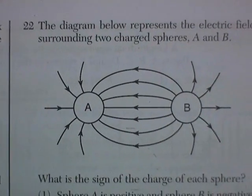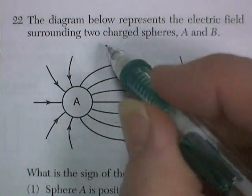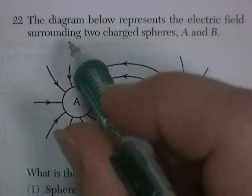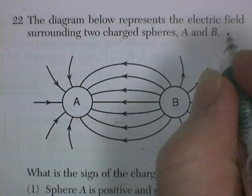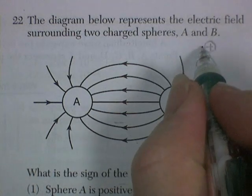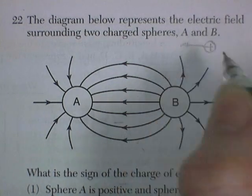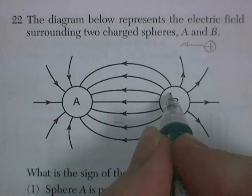Okay, let's go to 22. The diagram below represents an electric field surrounding two charged spheres. Now, electric field lines are drawn based on the path of a positive charge. So the arrows are going in that direction. So even before I read the question, they're going away from this, so this must be positive. They're going towards this, so that must be negative.